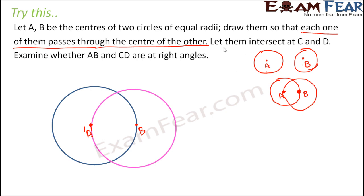Now, let the two circles intersect at points C and D. Examine whether AB and CD are at right angles — that is, whether this angle is 90 degrees. To find out, use a protractor. Place the protractor at the intersection and check if the angle between AB and CD is 90 degrees.